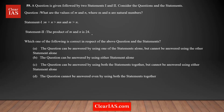Question number 59 is a data sufficiency question. They're asking for the values of m and n, where m and n are natural numbers — meaning any integer from 1, 2, 3, and so on. This is a value-based data sufficiency question. There are two types: value-based and yes-or-no questions. This one is value-based.